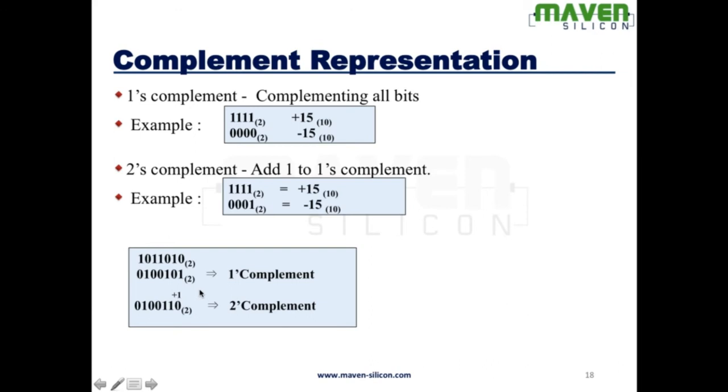Let's look at how to calculate 1's complement and 2's complement. This is the binary. When it comes to 1's complement, we have to complement each bit. 0 to 1, 1 to 0, 0 to 1, 1 to 0 like this. We have to complement each bit.